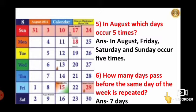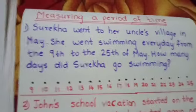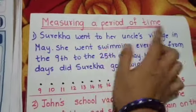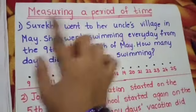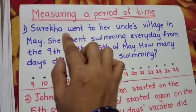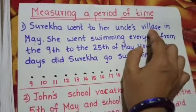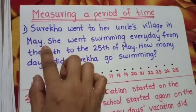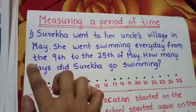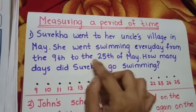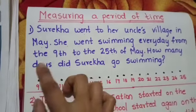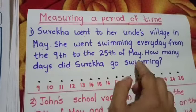Have you all understood now? Students, now we will learn about measuring a period of time. So let us see with the help of an example. Surekha went to her uncle's village in May. She went swimming every day from the 9th to the 25th of May. How many days did Surekha go for swimming?